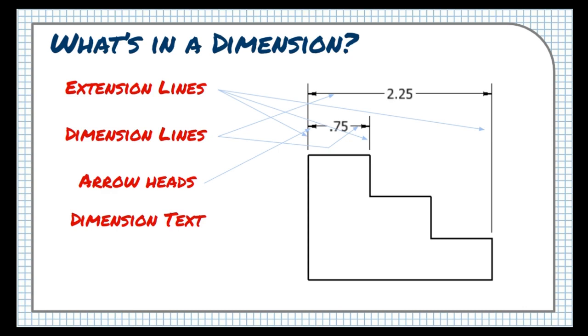Sometimes the text of a dimension can't fit between the extension lines with the dimension lines. In these cases, the dimension lines might be brought to the outside, pointing in, with the text in the middle.